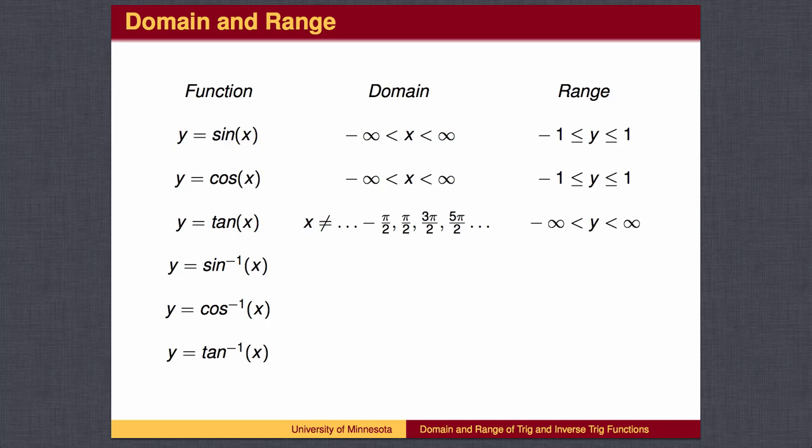For the inverse functions, the inputs and outputs are reversed. The inputs of an inverse trig function are numbers, and the outputs are angles. What are the possible inputs for inverse sine and inverse cosine? They are the possible outputs of sine and cosine, namely all numbers between negative 1 and 1.